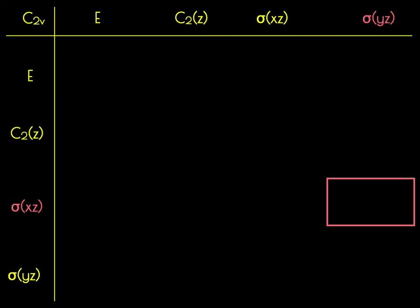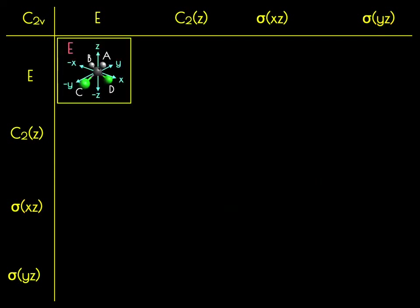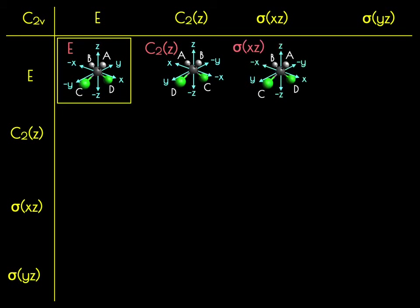To find a given product, say column 4 row 3, we first do the row operation then the column operation — so sigma XZ first, then sigma YZ — giving sigma XZ times sigma YZ equals C2Z. Filling out the E column: E times E is E, E followed by C2Z gives C2Z, E followed by sigma XZ gives sigma XZ, and E followed by sigma YZ gives sigma YZ.